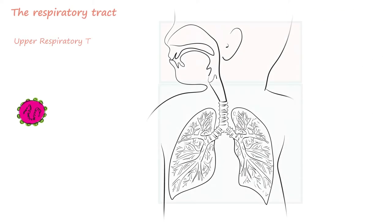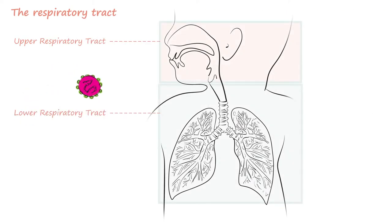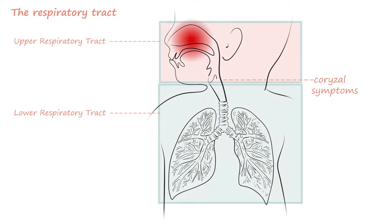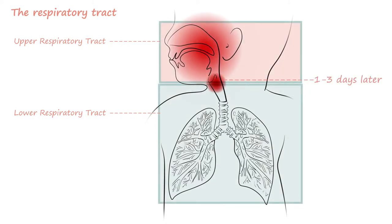Respiratory syncytial virus is the major cause of bronchiolitis. It is a single-stranded RNA virus spread through airborne droplets or direct contact with respiratory secretions. An RSV infection begins with replication of the virus in the nasopharynx, causing coryza symptoms. A lower respiratory tract infection can begin one to three days later.